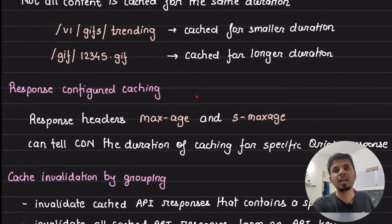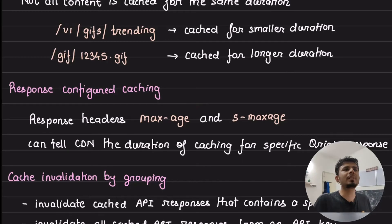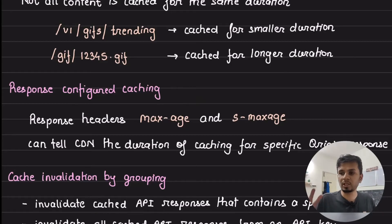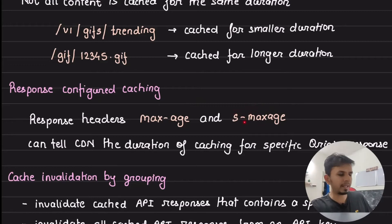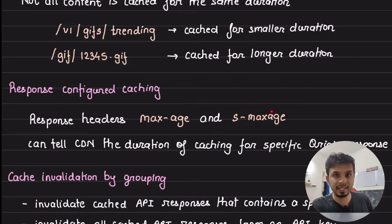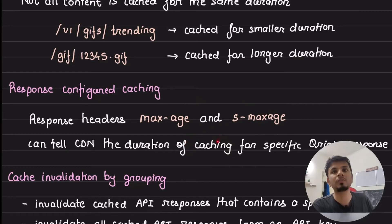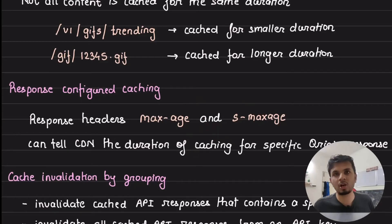The next feature is response-configured caching. You may not want to do only route-based cache duration. Your backend can dynamically indicate how long to cache something. In the response coming from the origin — whether it's S3 or your API server — you can configure a max-age or s-max-age header, which your CDN can read and then cache that particular response for that many seconds.